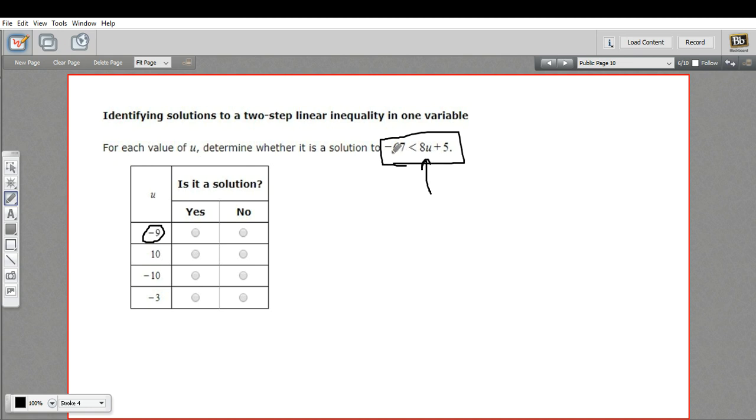This inequality reads negative 67 is less than 8 times u. So for the first one, that would be 8 times negative 9, and then we'd add 5 to it.